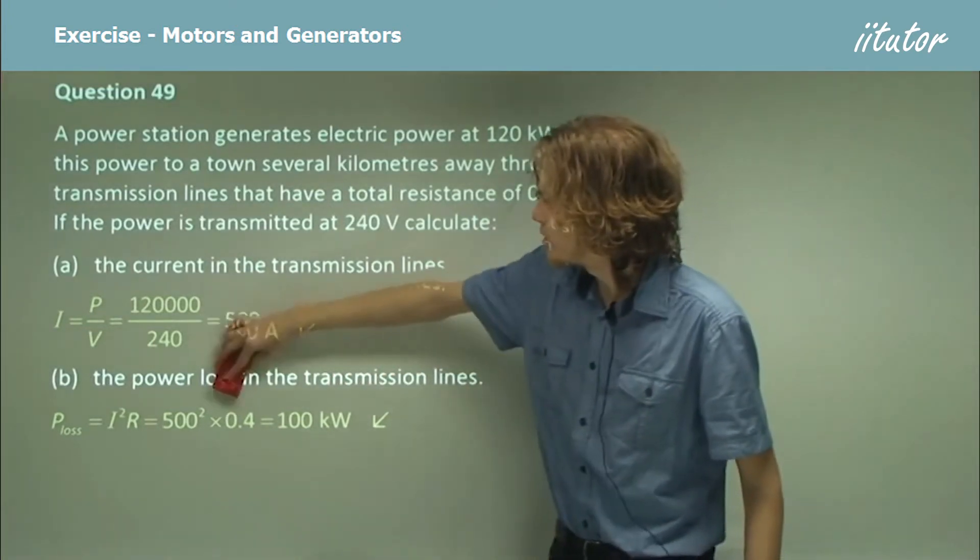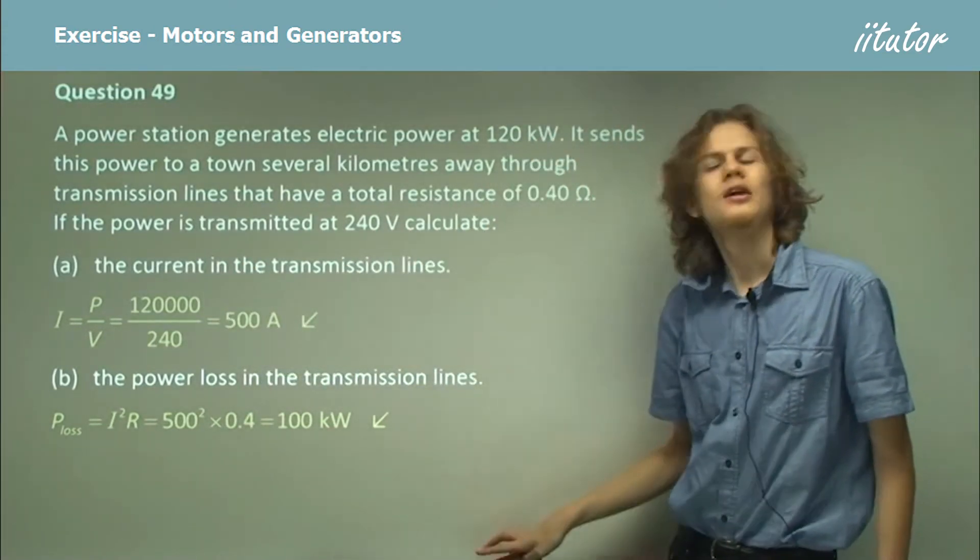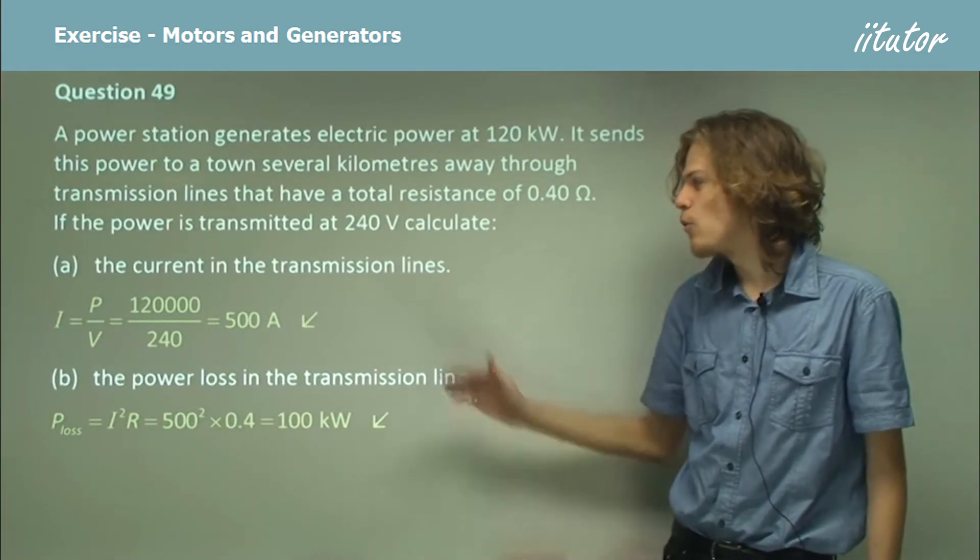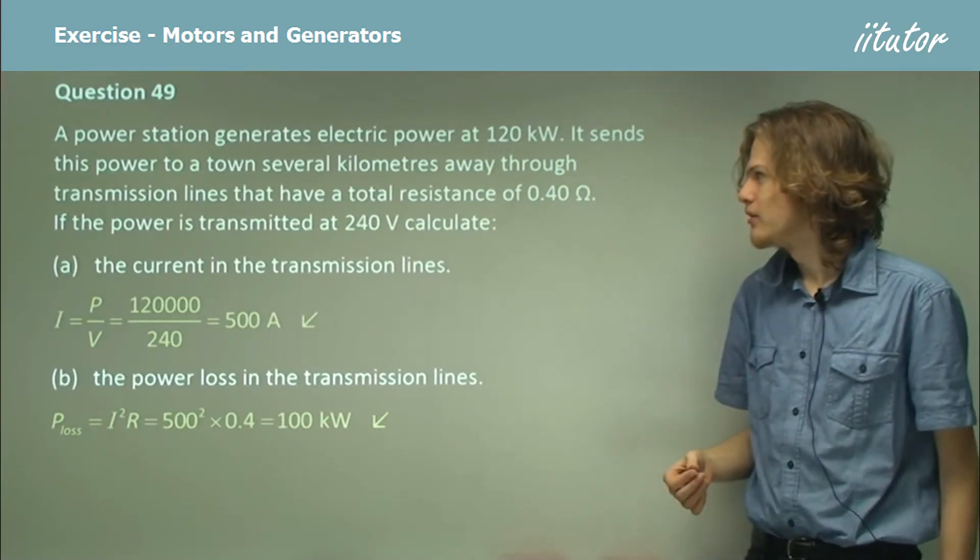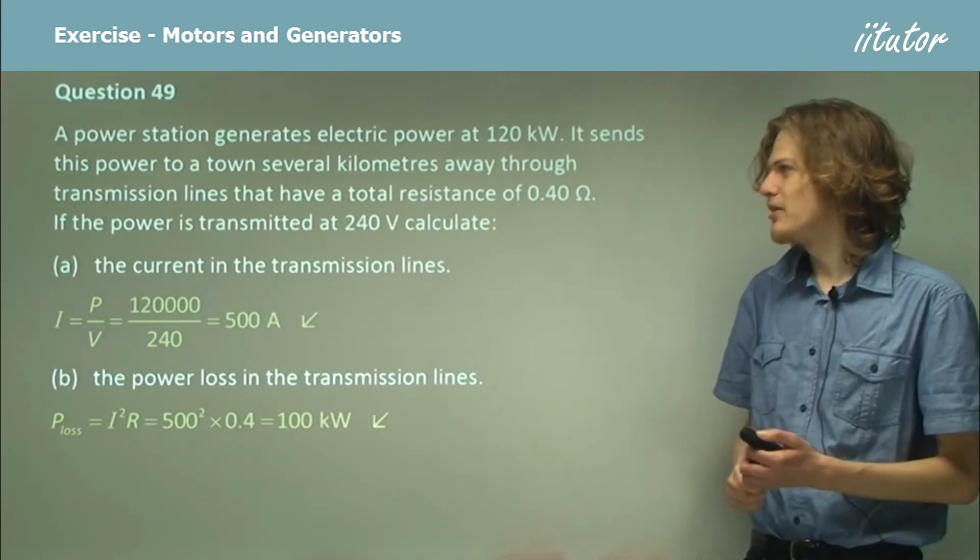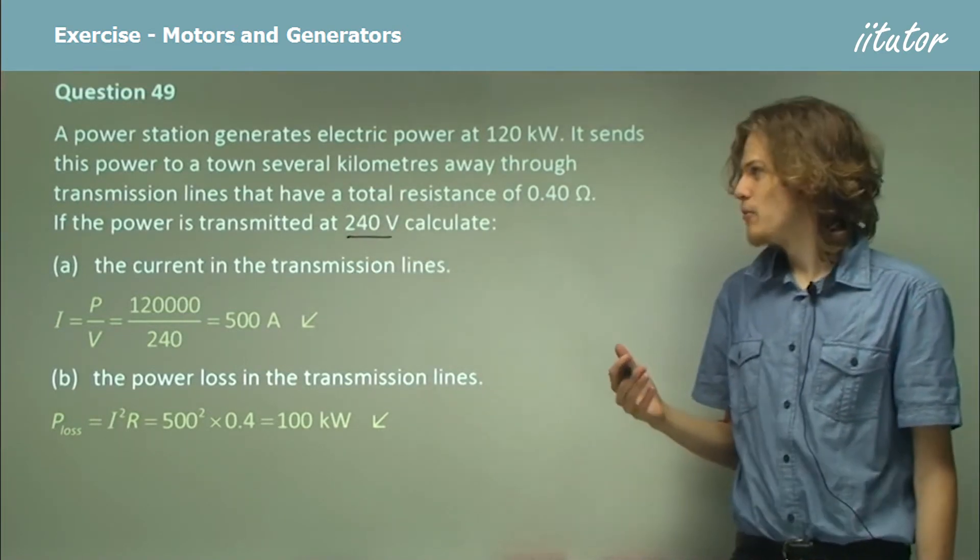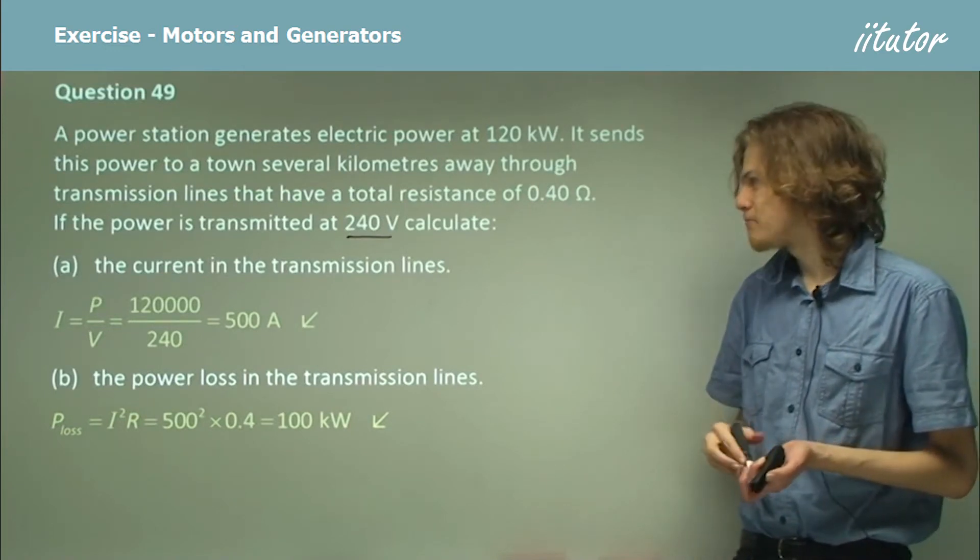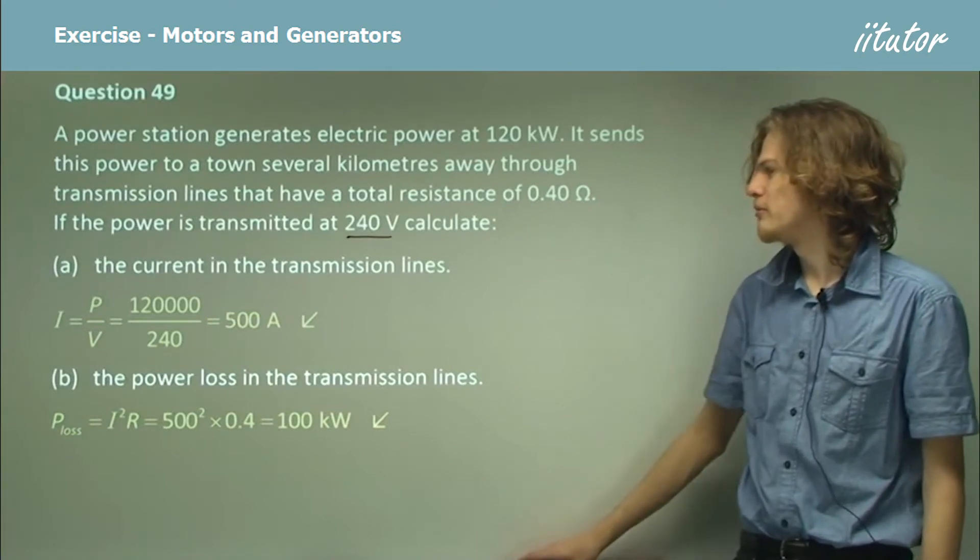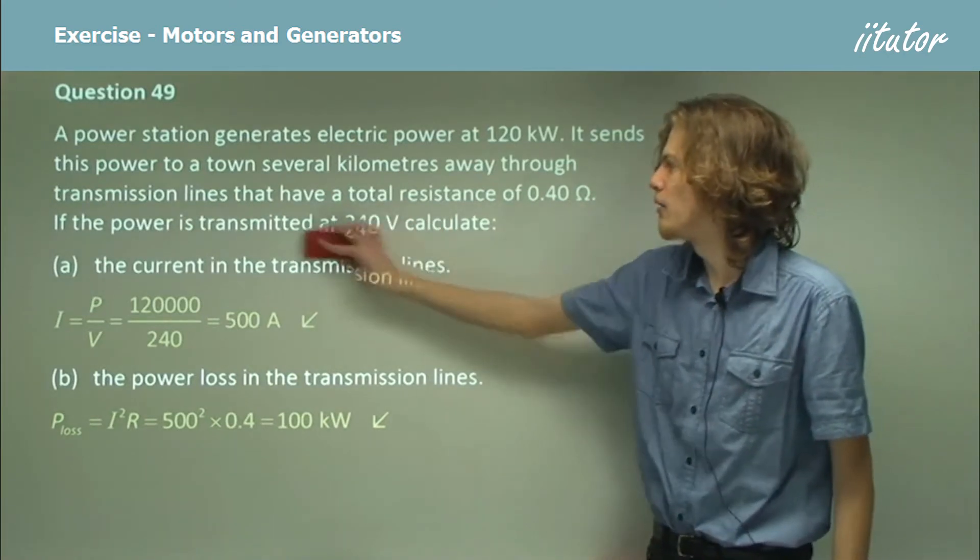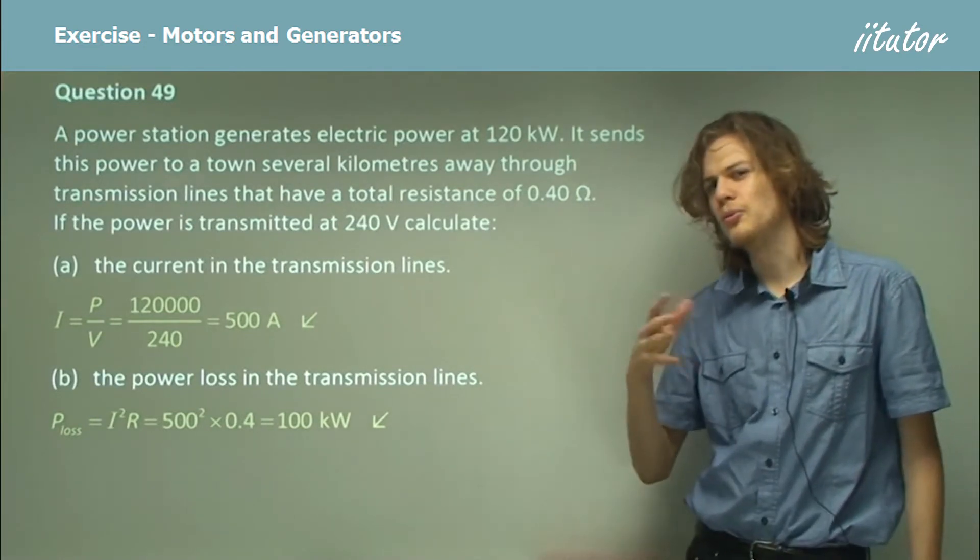So you can see that if we start off with 120 kilowatts and we lose 100 kilowatts, then five-sixths of our power is actually being wasted by heating up the lines that we're sending it through. So if we send it at 240 volts, then we're losing a lot of energy. If we want to send electricity this far, then we're going to need to step it up in order to send it without losing most of the power. Remember this question, because we'll come back to it in a little while.